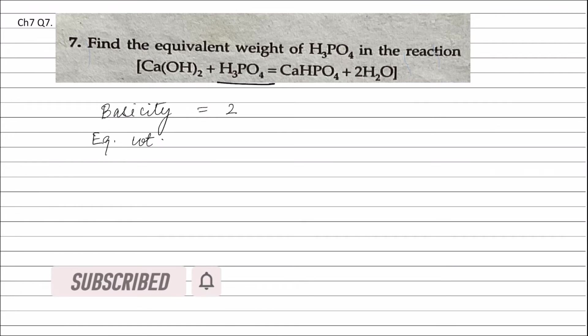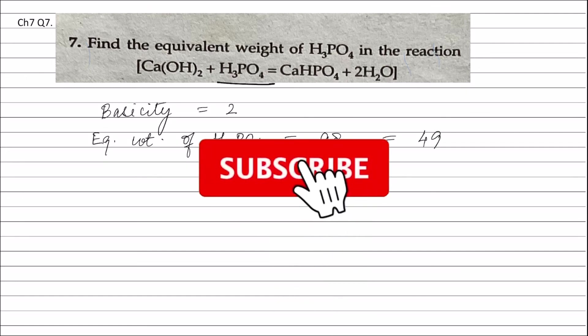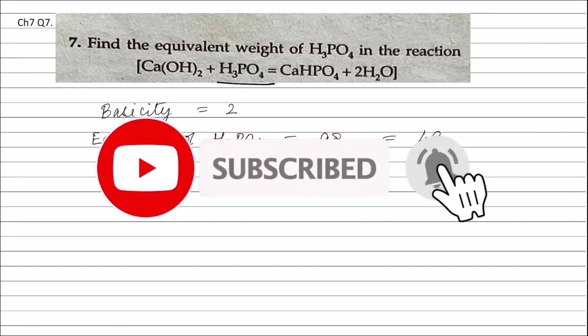Acid is equal to molecular weight divided by its basicity. Therefore, equivalent weight of H3PO4 will be equal to molecular weight of H3PO4, which is 98, divided by basicity. Now basicity of H3PO4 in this reaction is 2, so 98 divided by 2, and this is equal to 49.